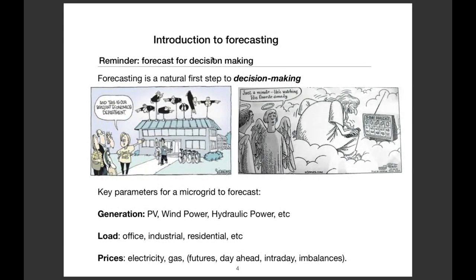A little reminder about forecasting: forecasting is a tool for decision making — it is a natural step to decision making. We use some key parameters for a microgrid to perform forecasts. For instance, we would like to forecast PV or wind power generation, hydraulic power generation, loads such as office or industrial, and also electricity or gas prices.